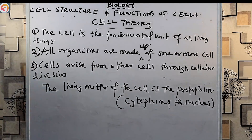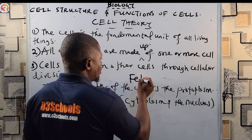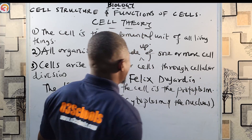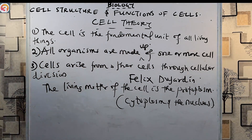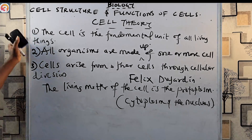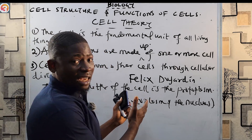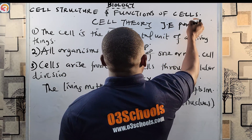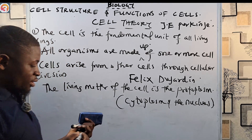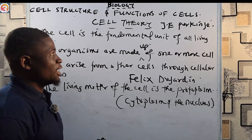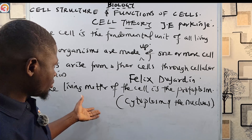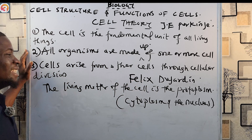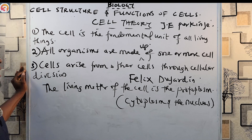The protoplasm was discovered by a man called Felix Dujardin, but the term 'protoplasm' was first used by a man called J.E. Purkinje. So the living matter of the cell is the protoplasm, which consists of the cytoplasm and the nucleus.